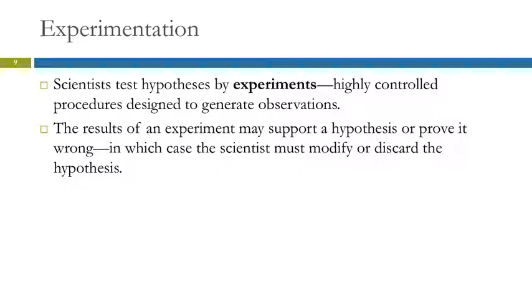We test hypotheses with experiments. Experiments are highly controlled procedures. We try to control everything that we possibly can. That's one of the things I like about chemistry—we are not dealing with living organisms. Living organisms, especially humans, are really hard to control. But with inanimate objects, non-living things, it's much easier. The results of the experiment can support the hypothesis or may prove it wrong. Sometimes you have to completely discard the hypothesis and start over with some other explanation. Other times, you just need to modify the hypothesis.